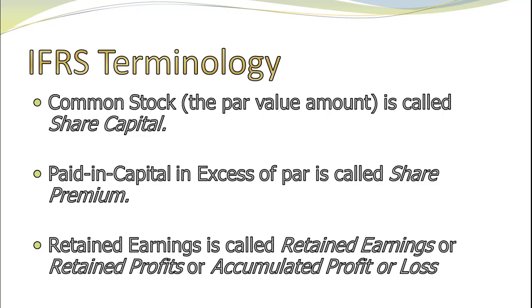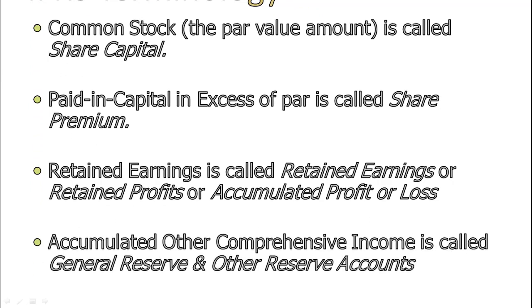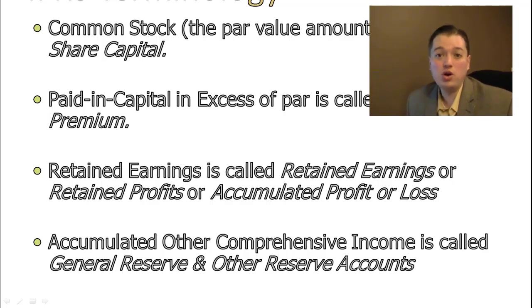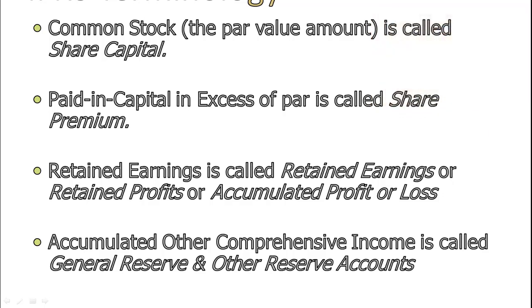We call it retained earnings; IFRS gives companies options — you can call it retained earnings, retained profits, or accumulated profit or loss. The last account that regularly appears in our equity section of the balance sheet is accumulated other comprehensive income — all the stuff where assets changed value but we had no control over it, like changes in currency translations or the current value of available-for-sale securities we aren't trading. Because we don't control it, we don't put it in the income statement; we lump it in this one account below retained earnings. Under IFRS, they call these the general reserve and other reserve accounts — not a difference in how we do things, just what we call things.